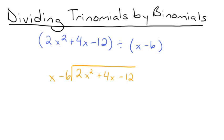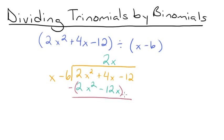Then we're going to see how many times x goes into 2x squared. x goes into 2x squared 2x times, because x times 2x is 2x squared. So now we're going to multiply 2x by x minus 6, and we'll get 2x squared minus 12x. Then we subtract our expressions. This gives us 4x minus negative 12x, which turns into 4x plus 12x, which is 16x, and then we bring down the minus 12.